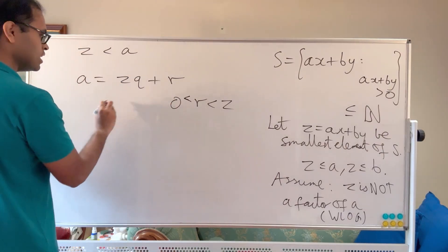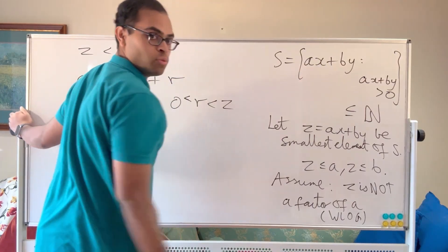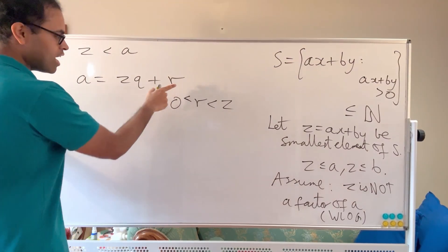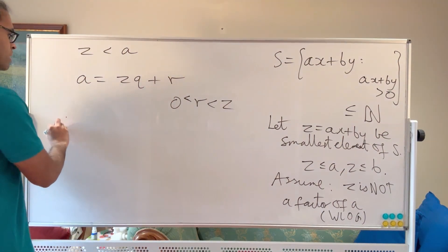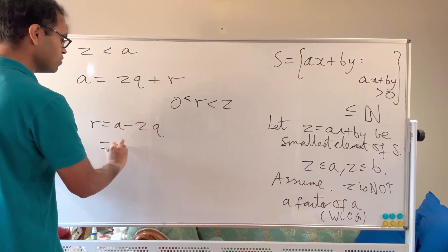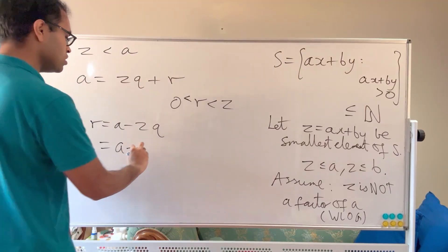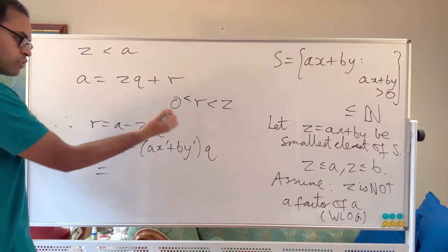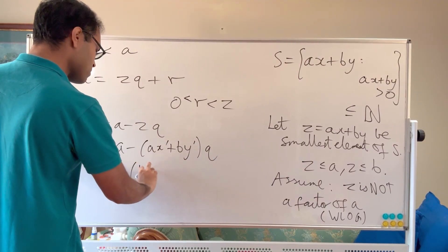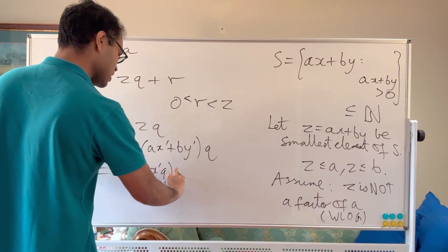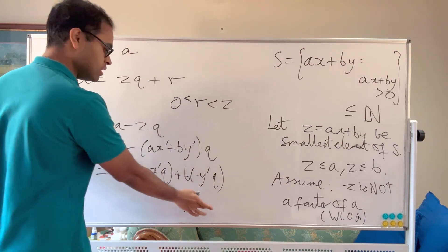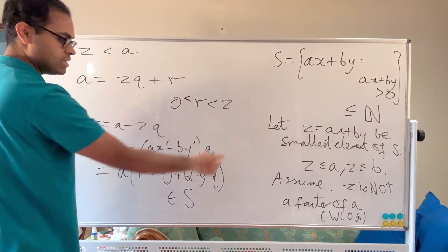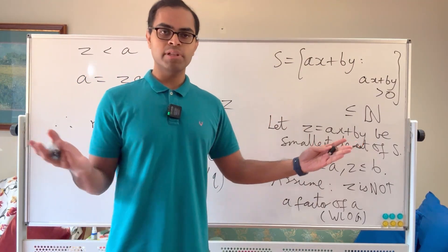Now, Z is in S so Z equals ax' plus by'. And a is also in S as a times 1 plus b times 0. Therefore R equals a minus ZQ equals a minus (ax' plus by')Q, which we can rewrite as a times (1 minus x'Q) plus b times (negative y'Q). So R is of the form ax plus by, meaning R is in S. But R is less than Z, and Z was the smallest member of S — that's a contradiction. So our assumption was false.